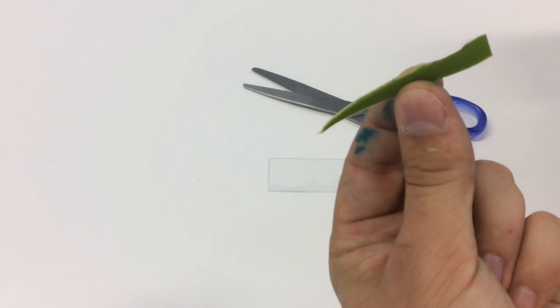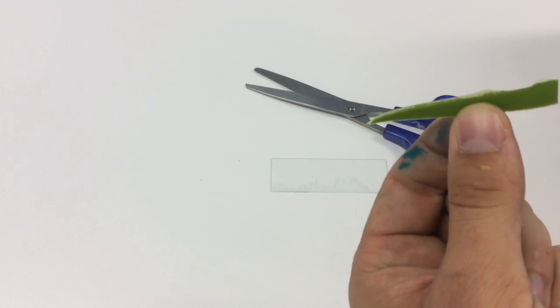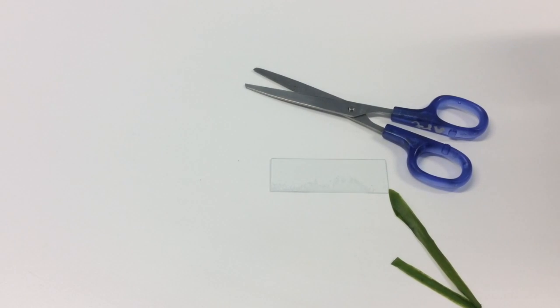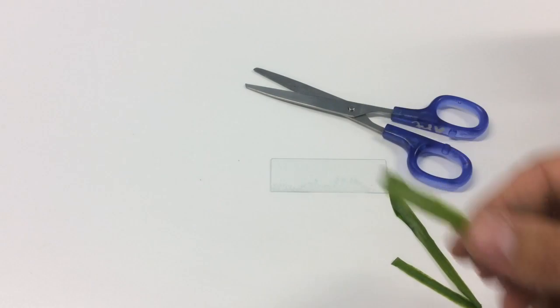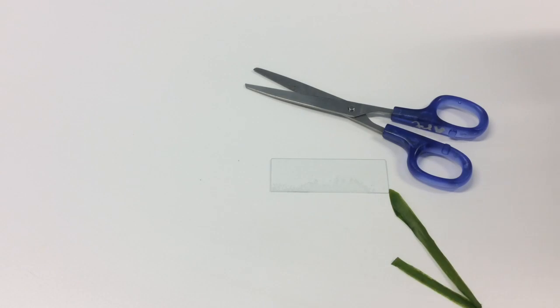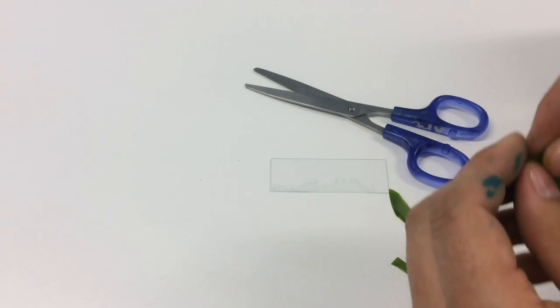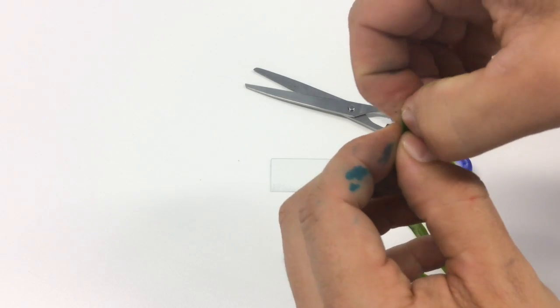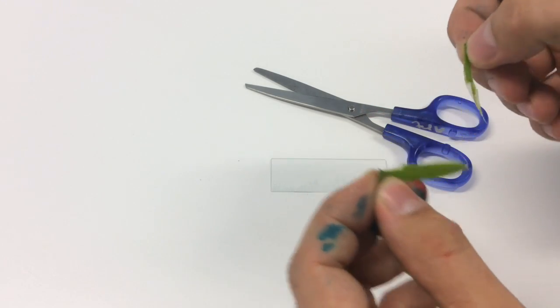Okay, so what you're trying to do is get a fine piece of your object to view under your microscope. So what I've done is torn the leaf in half like this.